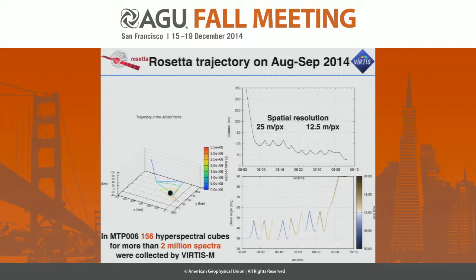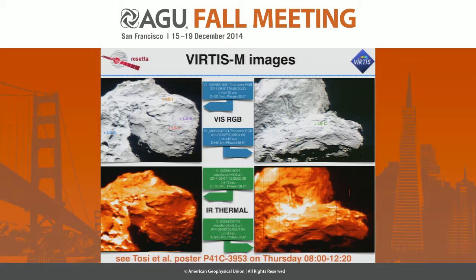The observations I will describe today were taken during August, when the spacecraft was flying on so-called pyramid orbits — trajectories almost linear around the nucleus at between 100 and 50 kilometer distances. The spatial sampling of our instrument was about 25 meters per pixel at the beginning of August, coming down to about 12.5 meters at the beginning of September. The solar phase was changing between 30 and 45 degrees, meaning all observations were taken at more or less the same illumination conditions, which allows us to reduce many photometric effects on the maps.